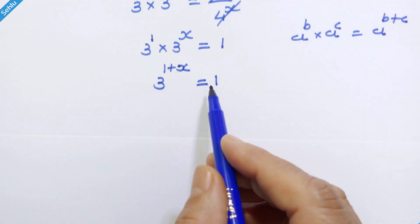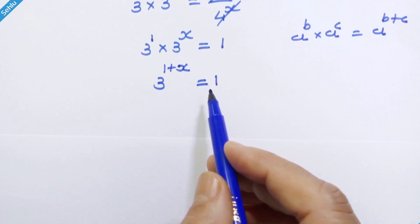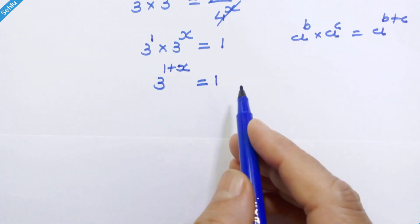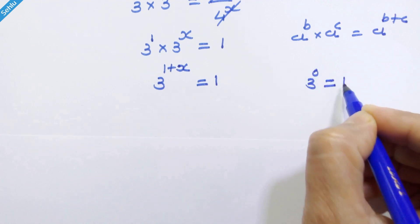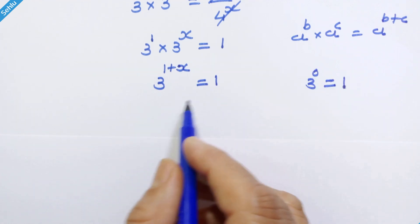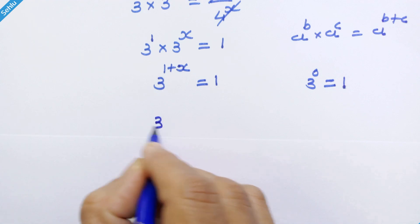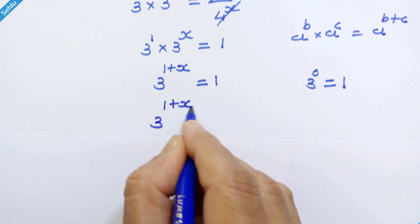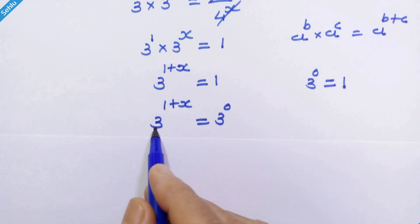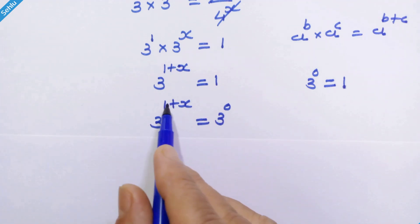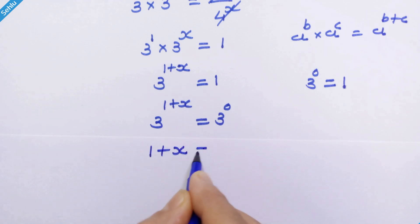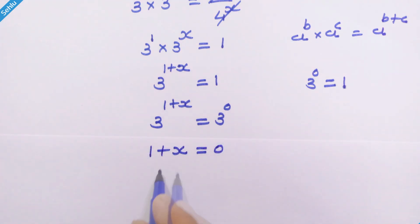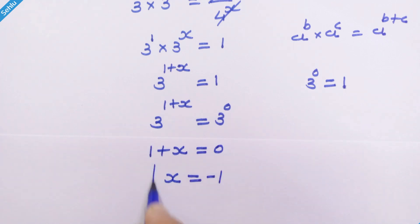Now 1 can be the result of a number that has 0 as an exponent. So 3 raised to 0 is also 1. We replace the 1 with 3 raised to 0. So 3 raised to 1 plus x is equal to 3 raised to 0. Now we have the same base, so the exponents should be equal. So we can write 1 plus x is equal to 0, which gives us x is equal to minus 1.